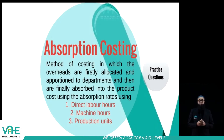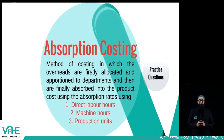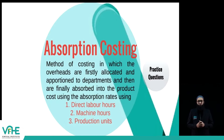Absorption costing absorbs overheads using three stages. Stage one is allocation, stage two is apportionment, and stage three is absorption.